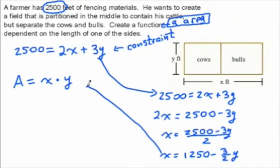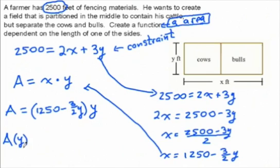So now I can take this and substitute it back into this equation. I'm going to get an area function in terms of y. I'm going to substitute the x with 1,250 minus three-halves y, and then finally bring my y down here. I can simplify this. It's an area function in terms of the side y of 1,250 minus three-halves—